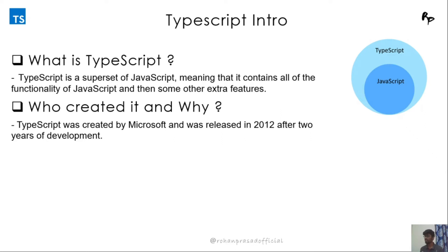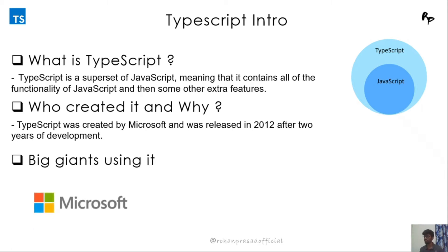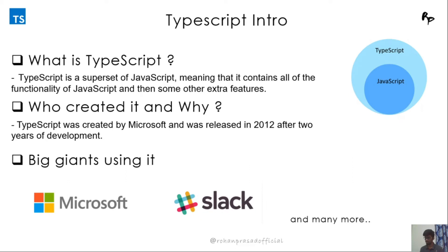Later on they open sourced it and everybody uses it to build their own projects. We'll see the features one by one that make TypeScript an awesome language. Big giants using TypeScript include Microsoft, who built it and use it heavily in their projects, as well as Slack — a messaging platform heavily used by organizations for internal communication — and many more.